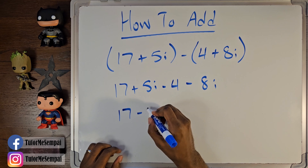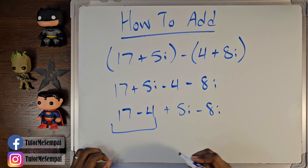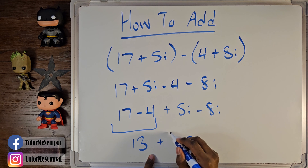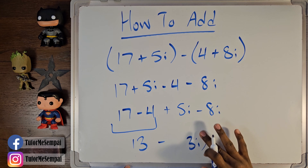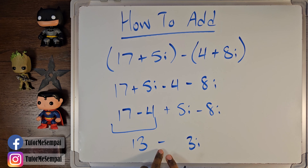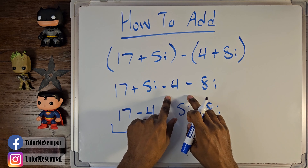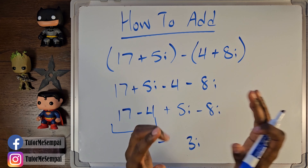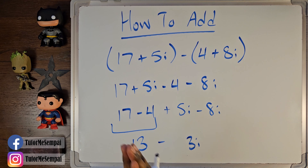Then we group like terms like we did before: 17 minus 4, plus 5i minus 8i. When you subtract these, you're left with 13. When you do these, you're left with negative 3i. So the resulting complex number is 13 minus 3i. Whenever you have subtraction, you just have to make sure you don't forget to distribute the negative — both parts' signs should be flipped if you have a negative in front, before you can safely drop the parentheses. Other than that, you're going to do the same thing you did when adding complex numbers.